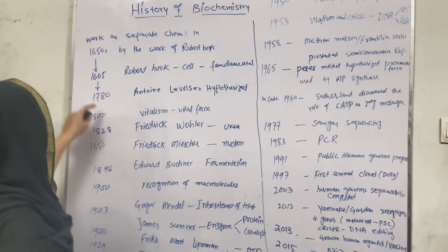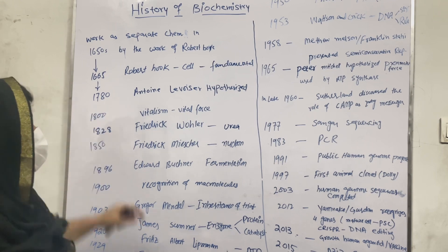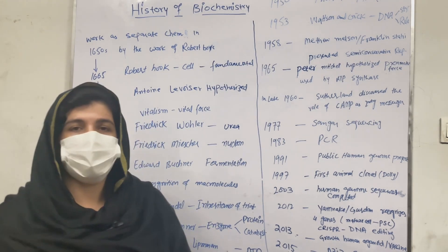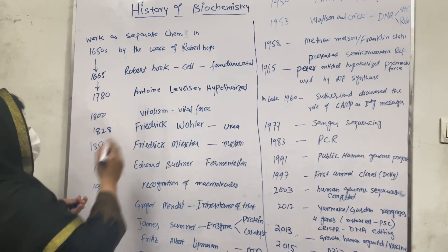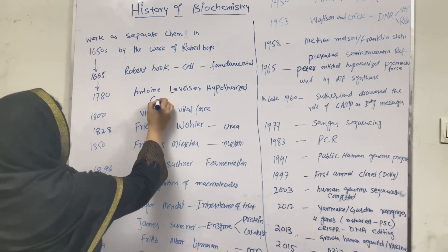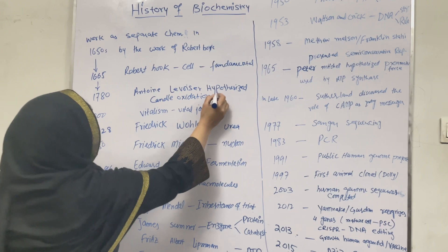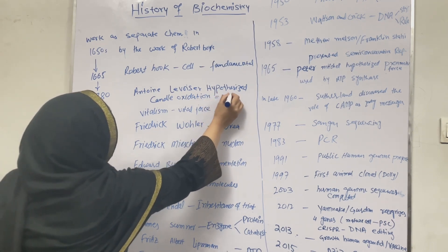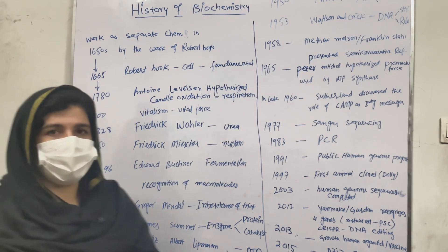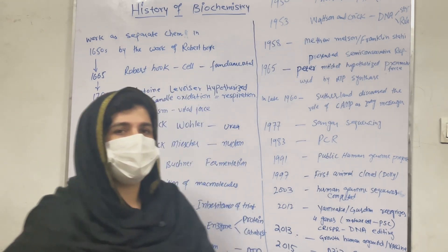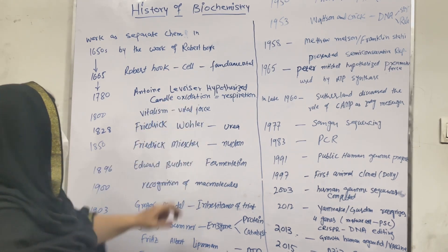After 1665, in 1780, Lavoisier gave a hypothesis about the oxidation of a candle, which is oxidized in air. This is similar to that of respiration — candle oxidation and respiration are similar phenomena, as both require oxygen. Respiration is also a metabolic process which gives us carbon dioxide along with some amount of energy in the form of ATP. This concept was given by the scientist Lavoisier in 1780.